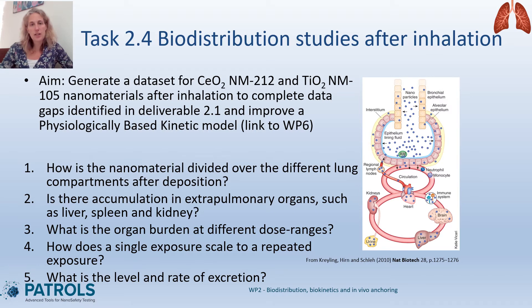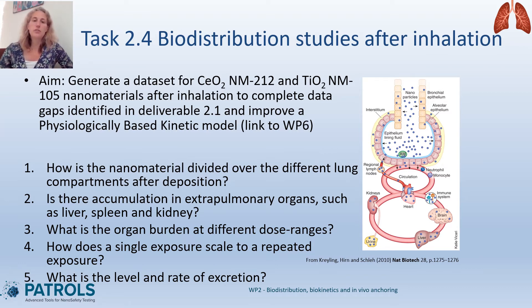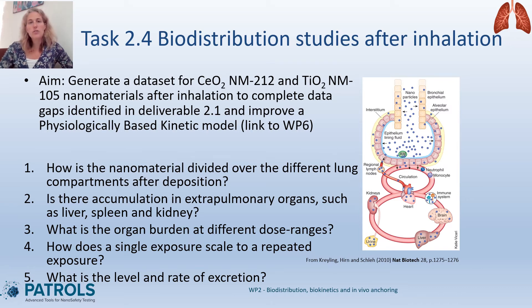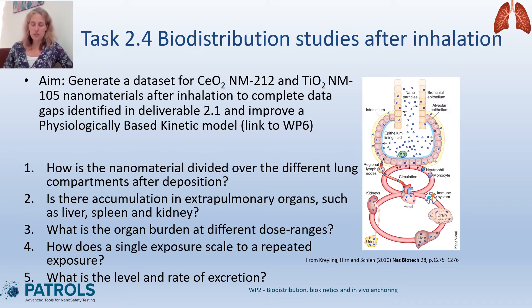We also wanted to assess accumulation in extrapulmonary organs such as liver, spleen, and kidney. We were wondering what the organ burdens are at different dose ranges and whether they differ between low, mid, and high doses. We also asked how a single exposure scales to repeated consecutive exposure, and what is the level and rate of excretion. Therefore, we determined the silicon and titanium amounts in urine and feces by ICP-MS.